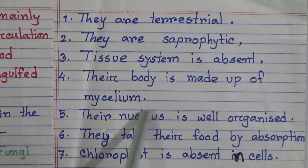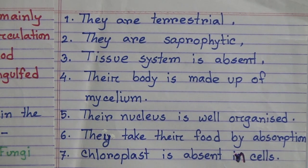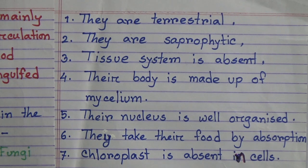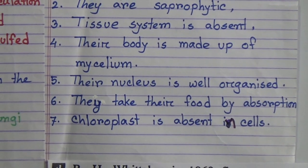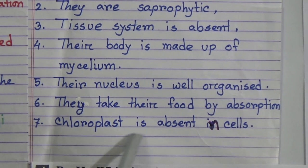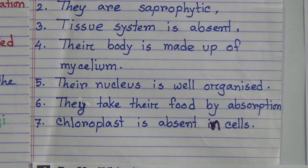Number four: their body is made up of mycelium. Number five: their nucleus is well organized — meaning their nucleus contains cell organelles like mitochondria, nuclear membrane, nucleoplasm, cytoplasm, Golgi body, and endoplasmic reticulum. Number six: they take their food by absorption — that means they absorb food from other plants and animals. Number seven: chloroplast is absent in their cells; because of the absence of chloroplast, they cannot produce their own food, which is why they absorb food from other organisms.